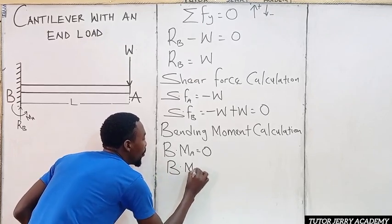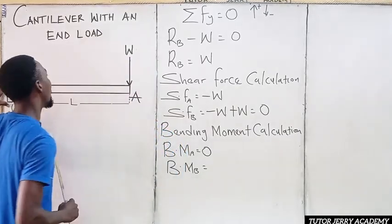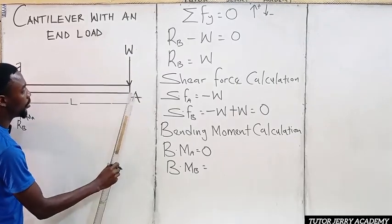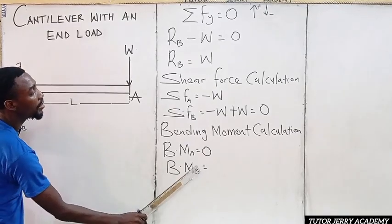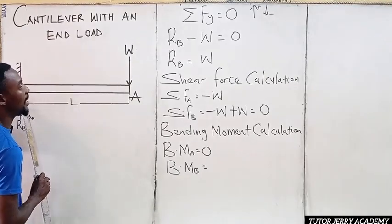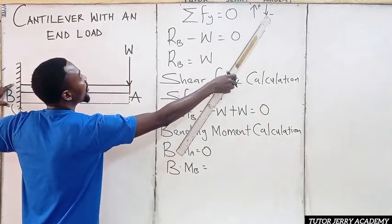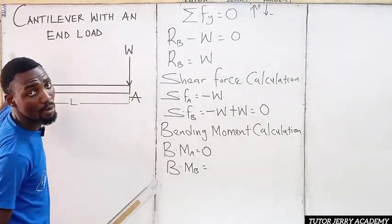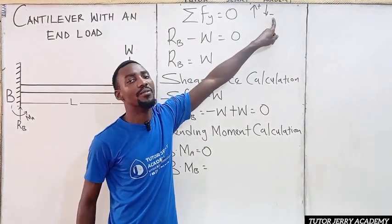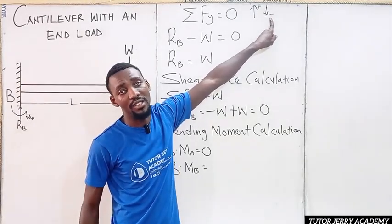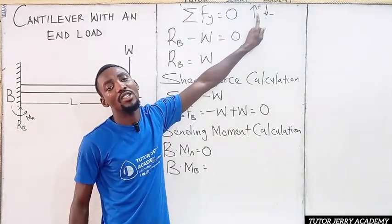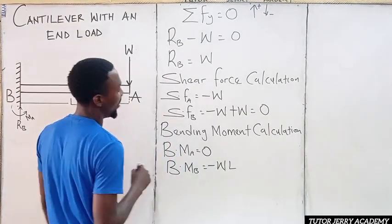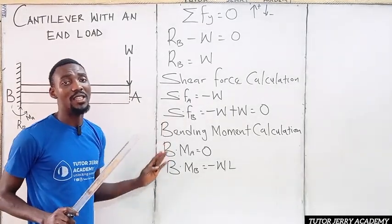The bending moment at point B: standing at point B, we have load W acting over a total distance of L (or a). The moment is W multiplied by L. Since we said downward force is negative — meaning clockwise moment is negative — and upward force positive means anti-clockwise moment is positive, the bending moment at B is minus W times L (or minus Wa).